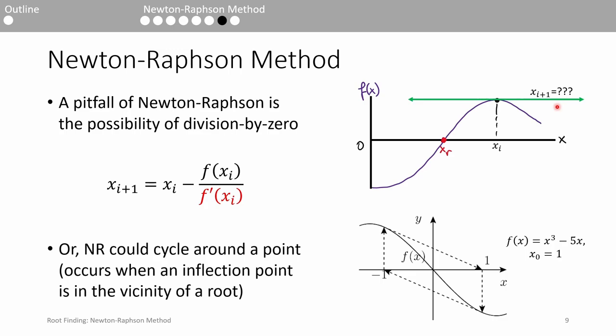Another interesting behavior is when the algorithm ends up cycling around a point. This usually occurs when the root is very close to or is the function's inflection point. For example, try applying the Newton-Raphson method to the function x cubed minus 5x with an initial guess of 1. The algorithm will cycle between negative 1 and 1 infinitely due to the geometry of the function in concert with the initial guess. Once again, this can be avoided by choosing an initial guess closer to the root.